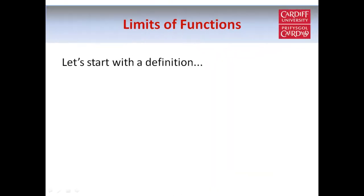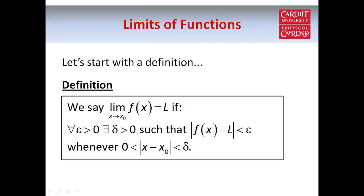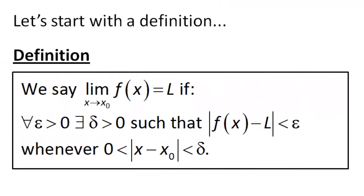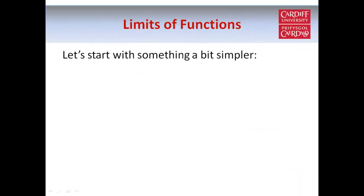Let's start off with the formal definition of the limit of a function at a point. Now part of the problem with this definition is that it involves these strange symbols epsilon and delta, and the first time you see this definition it's not clear exactly what these quantities are supposed to represent. So before we talk about the formal definition, let's start with a diagram to illustrate the idea of limits of functions.